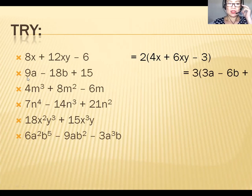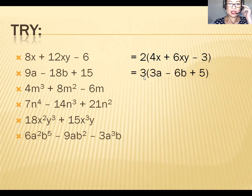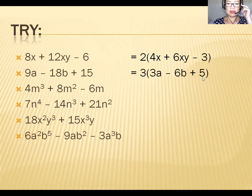Number two: the GCF for 9, 18, and 15 is 3. Then: 9 ÷ 3 = 3 (copy the variable), negative 18b ÷ 3 = −6b, and positive 15 ÷ 3 = 5.